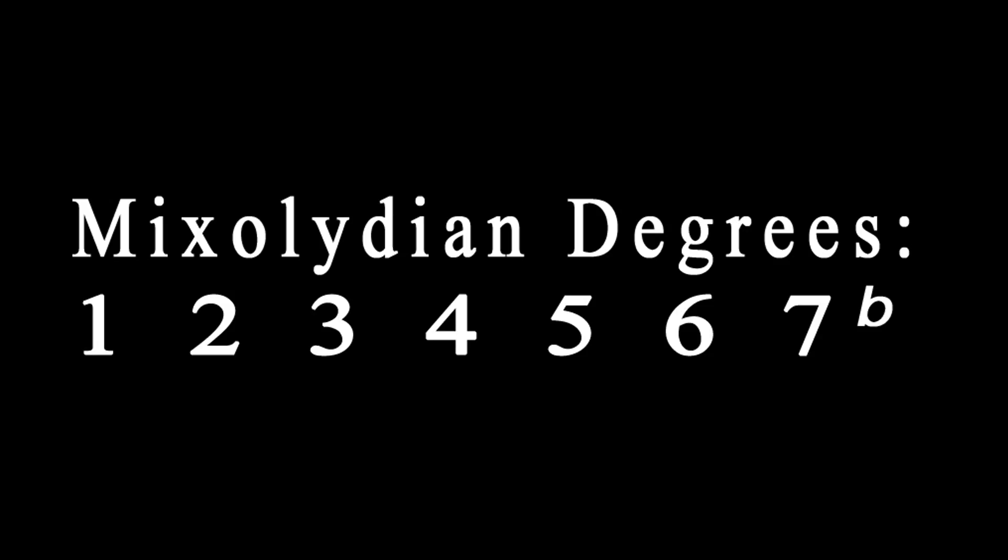Since the 7th scale degree in the key of G is normally an F sharp, it would become a plain old F natural in the mixolydian mode. Note that when you modify a scale degree like this, it's a half step movement relative to where it began. So a flattened scale degree would take a sharp to a natural, or it would take a natural to a flat. It would not change a sharp note into a flat note.